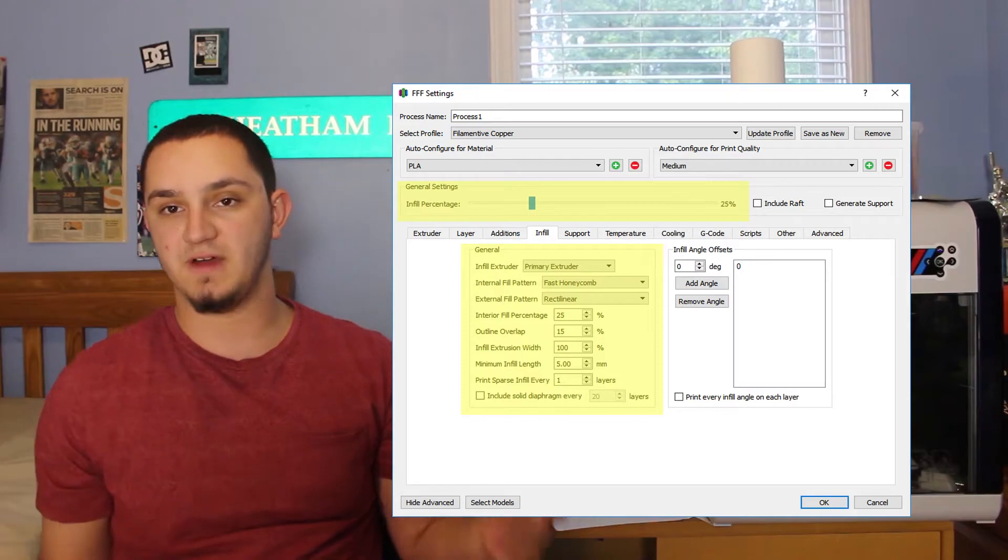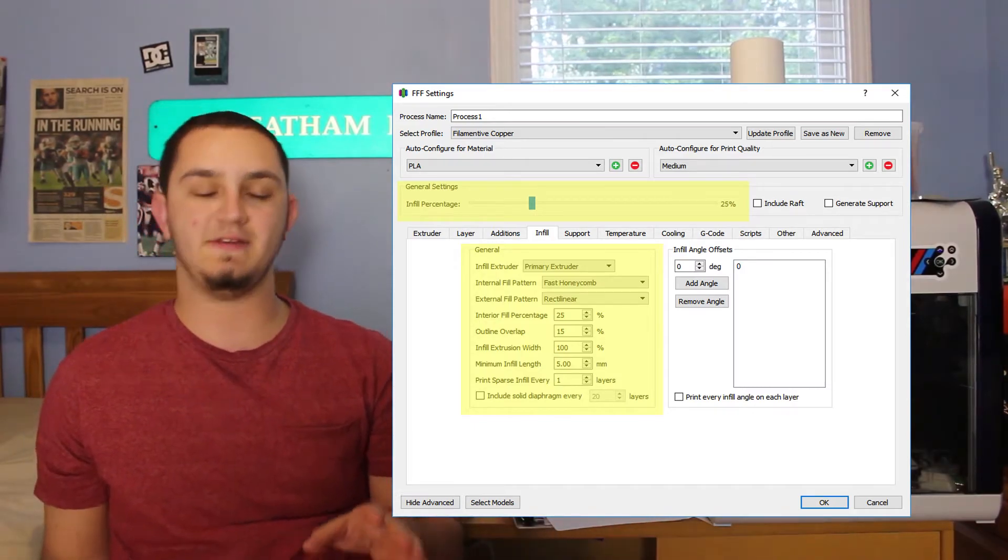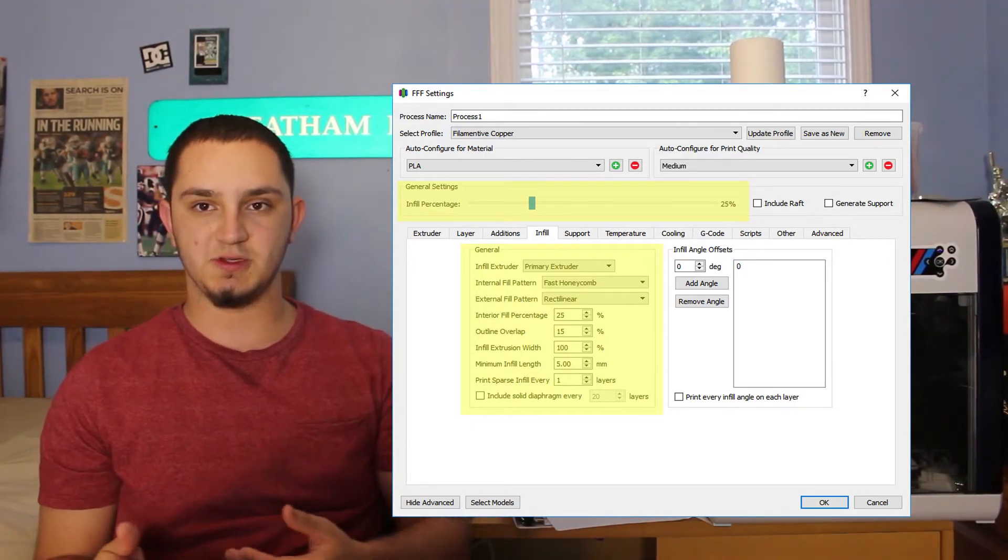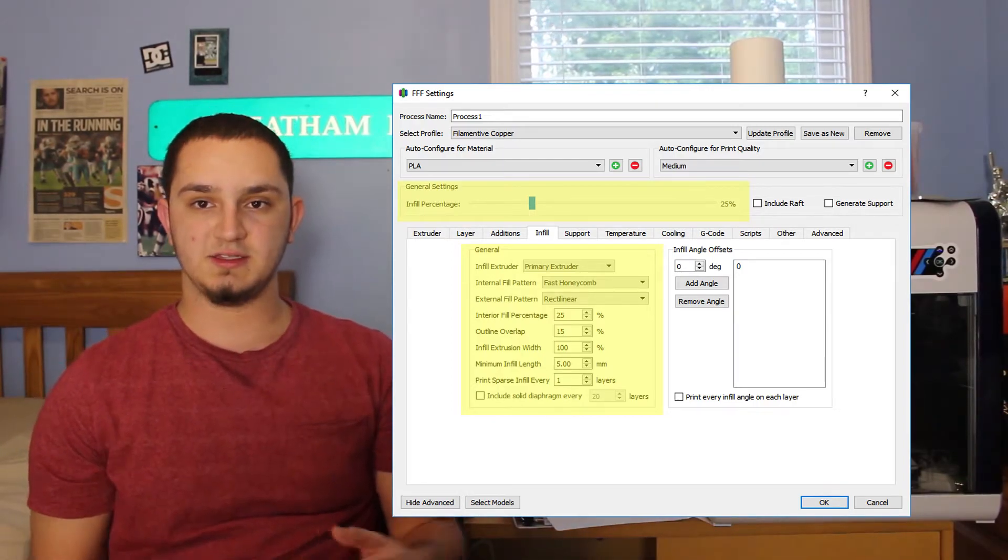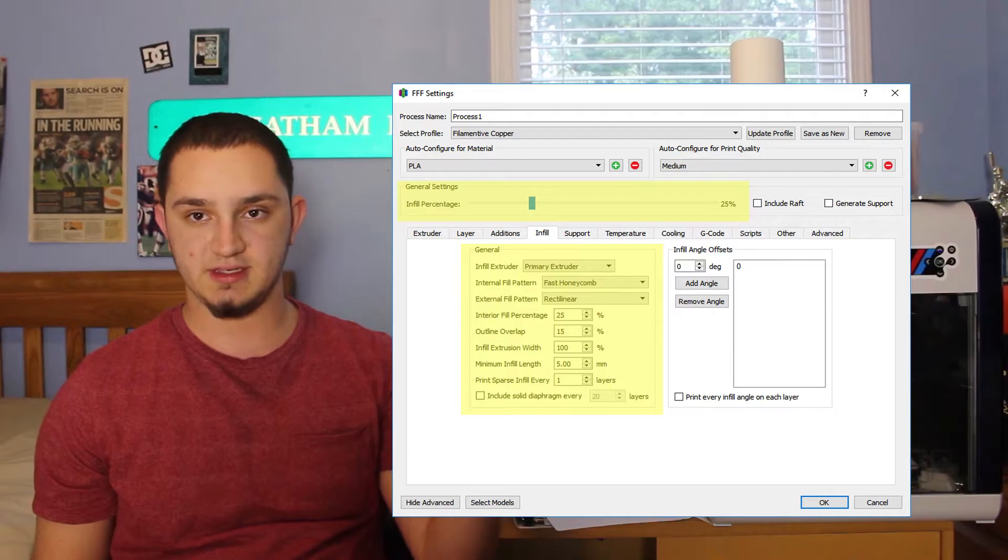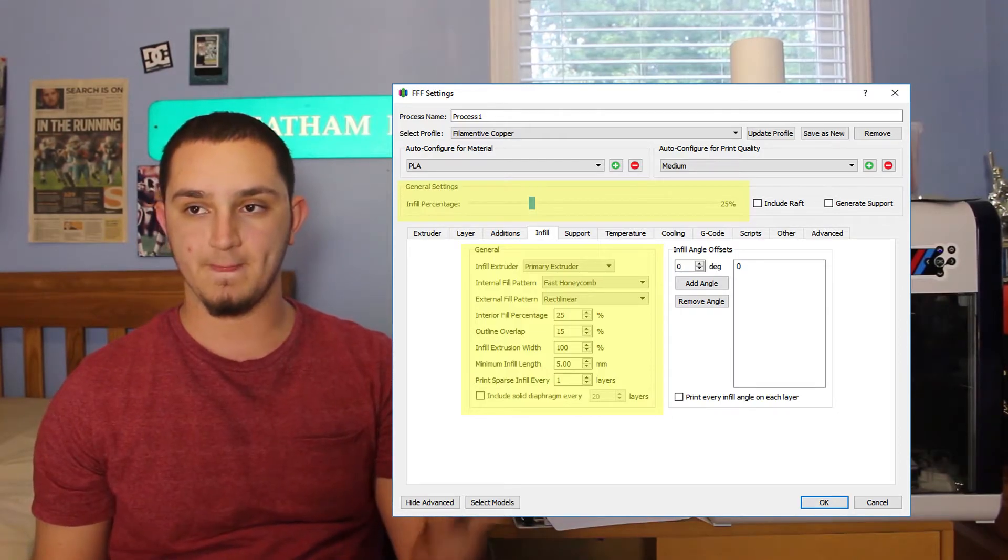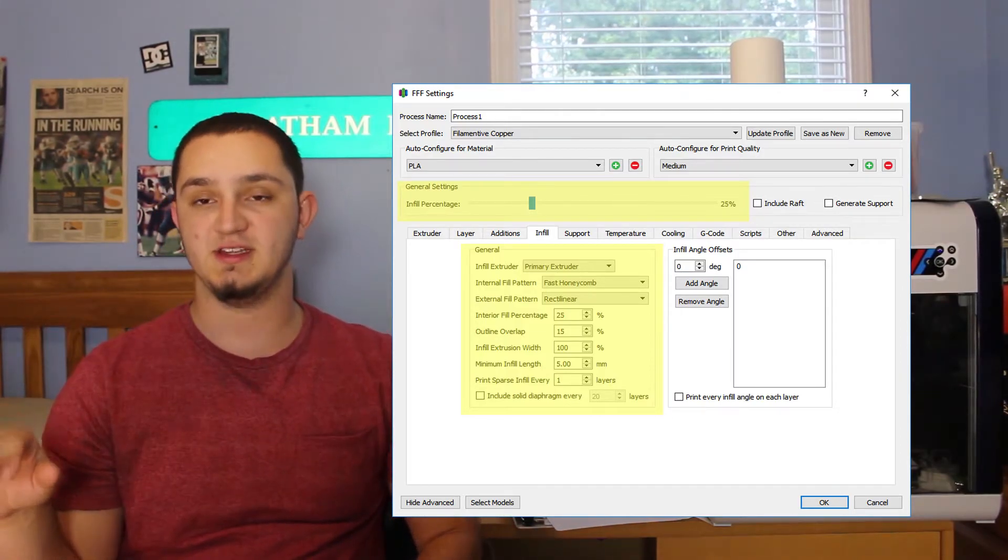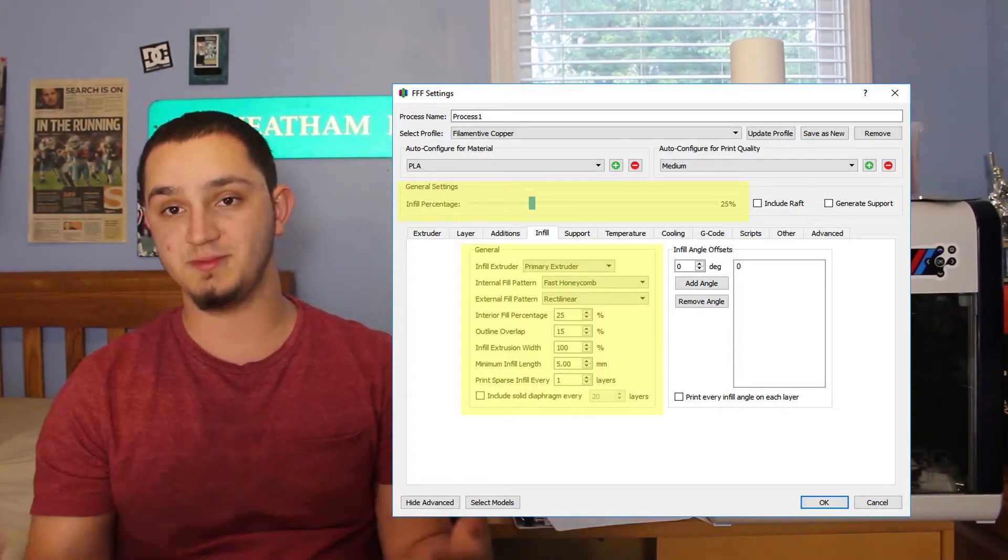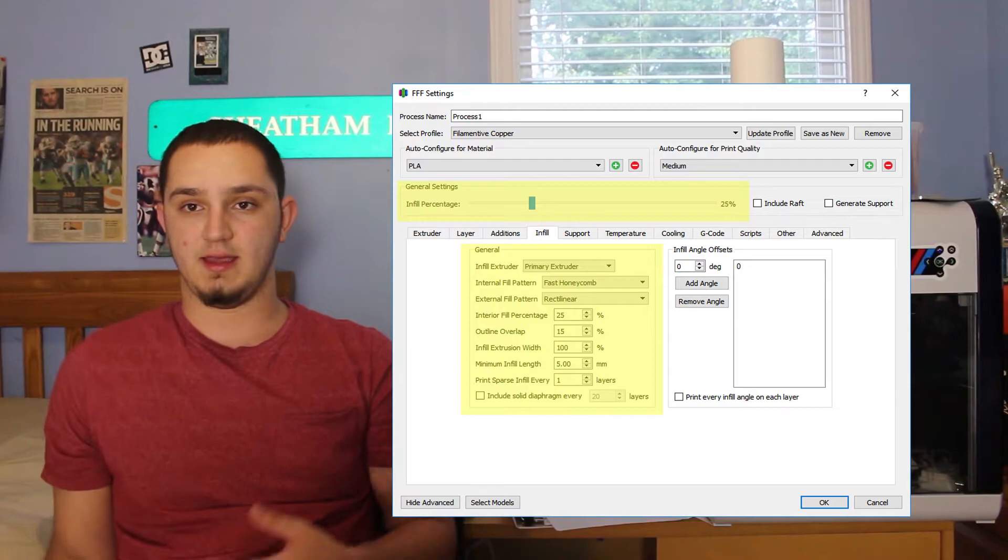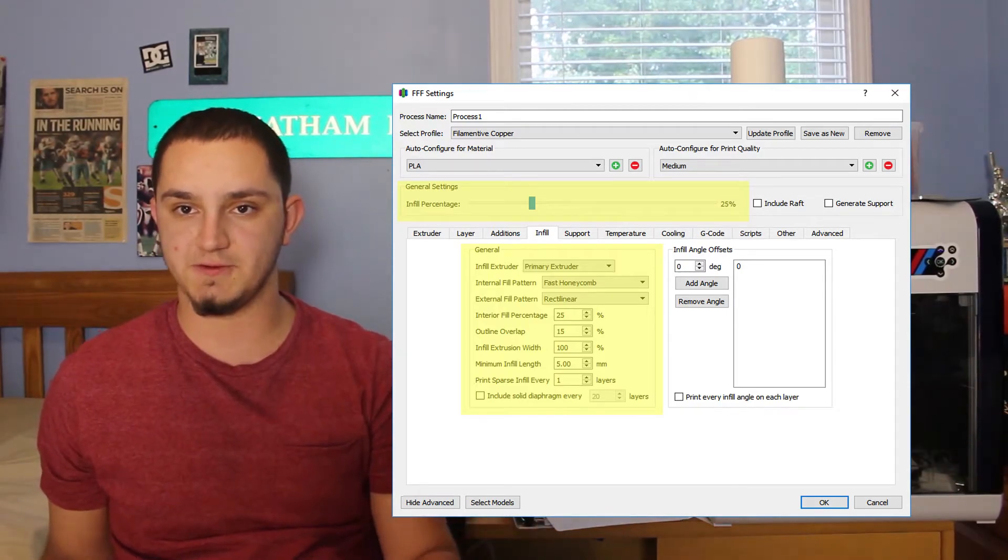For the infill, I use 25% and this does have a small adjustment with the shells that you use. This is with six shells on the sides, top and bottom, along with the 25% infill, and that is the standard infill hatch pattern that Simplify3D has.